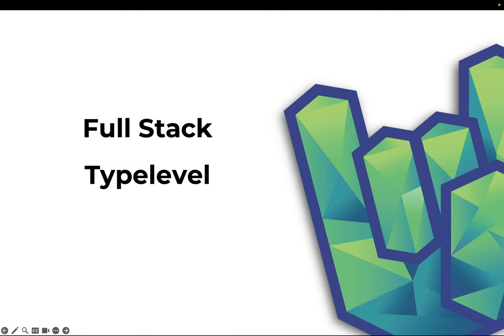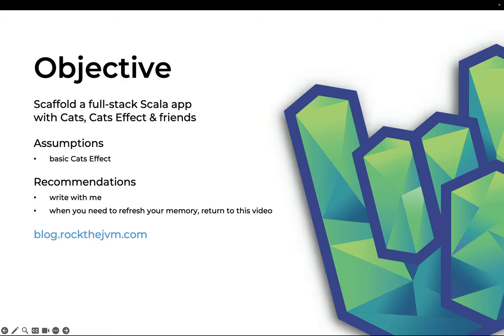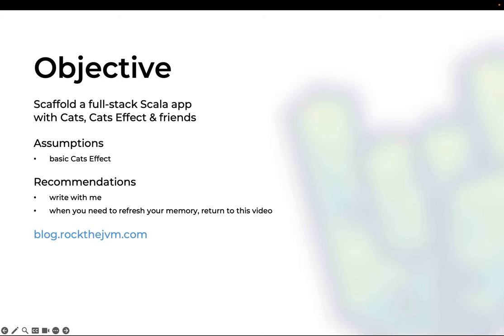Hey everyone, this is Daniel for Rock the JVM, and you are watching a tutorial on how to scaffold full-stack Scala 3 applications with the Typelevel stack. This video is a tutorial on how to build a full-stack Scala app from scratch with minimal features using Cats, Cats Effect, and a bunch of other libraries in the ecosystem. The assumptions are that you have solid knowledge of Scala, basic knowledge of Cats Effect, Cats, and other libraries in the Typelevel ecosystem, including Doobie and HTTP4S.